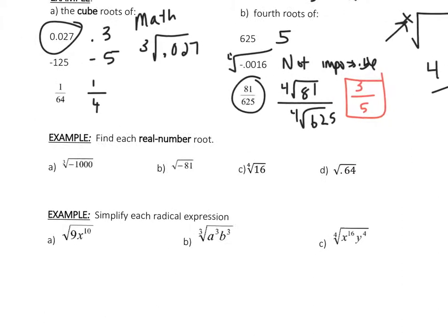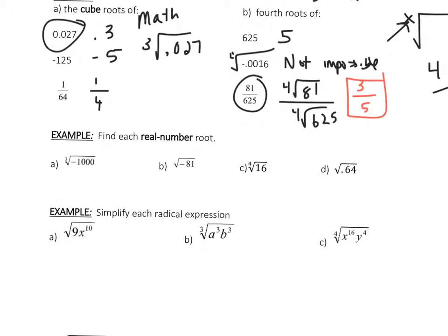Find each real number root — so again, this is a calculator thing. The cube root of negative 1,000 is negative 10. You can take the cube root, the 5th root, the 7th root of negative numbers. But if it's an even root — so this is technically a square root — this is not possible or not real. The fourth root of 16 is positive 2. And the square root of 0.64 — since this is a decimal, you want to end as a decimal — so this is 0.8.